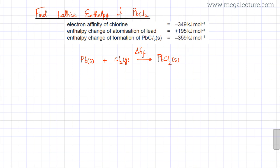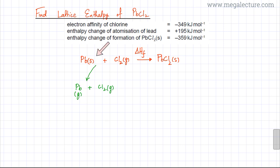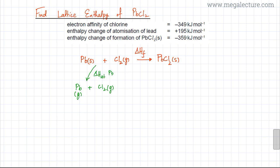The first step is to atomize lead, since lead is solid. We need gaseous lead atoms. Chlorine (Cl2 gas) is kept as it is. In this step, the metallic bonds between solid lead atoms are broken and one mole of gaseous lead atoms is formed. This step corresponds to the enthalpy change of atomization of lead.